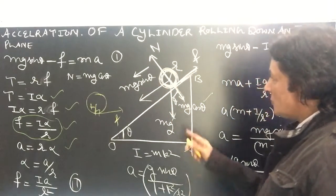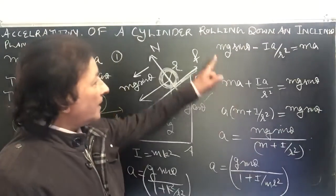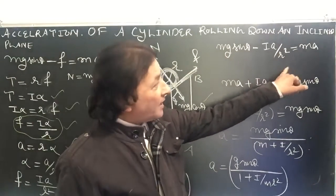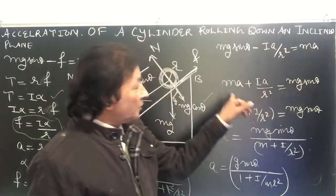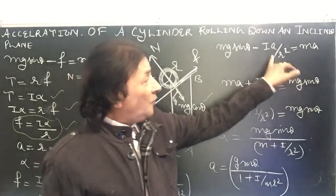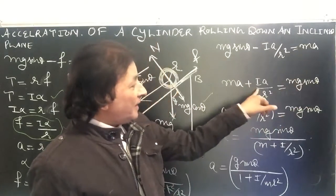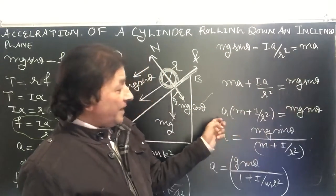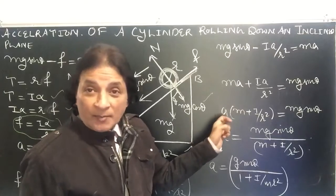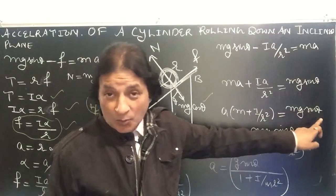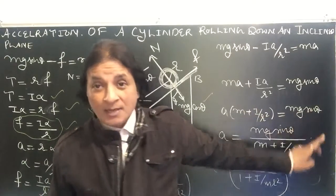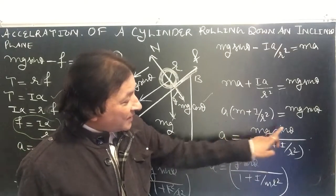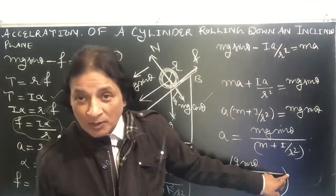So mg sine theta minus I a upon r squared equals ma. Rearranging: ma plus I a upon r squared equals mg sine theta. Taking a out: a times (m plus I upon r squared) equals mg sine theta. Therefore, the acceleration a equals mg sine theta upon (m plus I upon r squared).